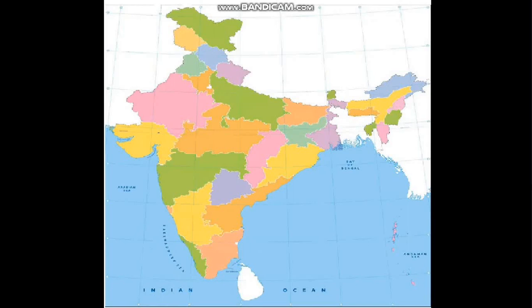Now we shall be discussing about important states and their important cities. First of all, we will discuss about Maharashtra. Maharashtra is a very important state and it is situated in the western part of India. Mumbai is its capital and it contributes a lot to industrial, commercial, and financial development. Pune is the second largest city in Maharashtra and Nagpur is its winter capital, known for its orange production.